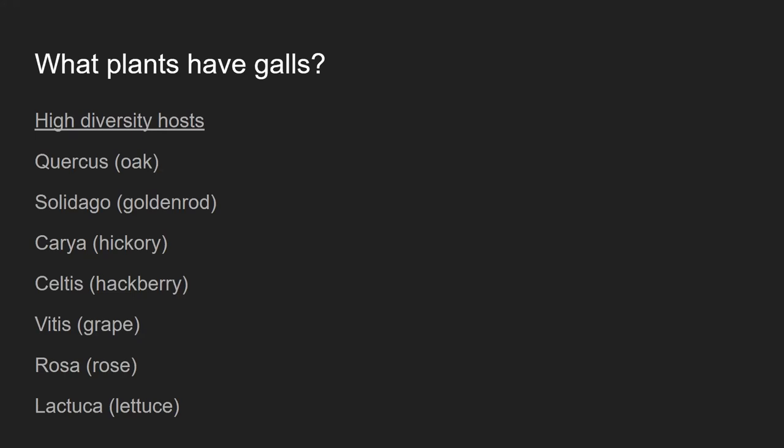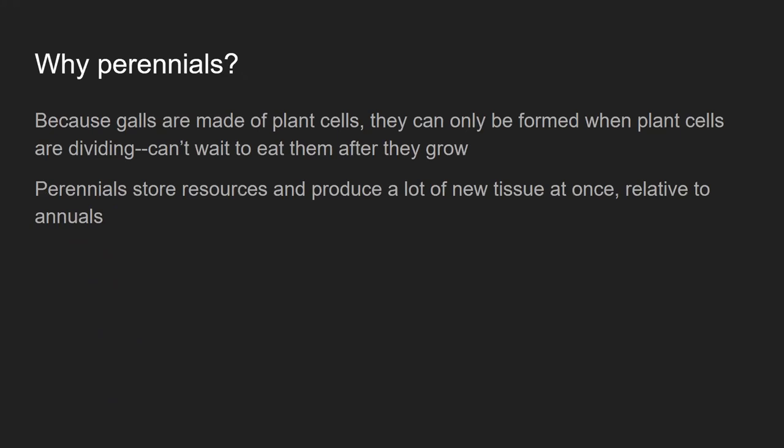Some of these plants are very long-lived woody trees — oaks, hickories, hackberries. Some are woody vines like grapes, woody shrubs like roses. And then we've got herbaceous perennials like goldenrods and an herbaceous biennial with lettuce. The thing that unites all of these plants is that they are, if not perennial, then at least biennial.